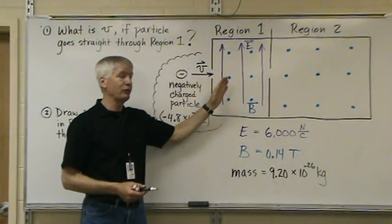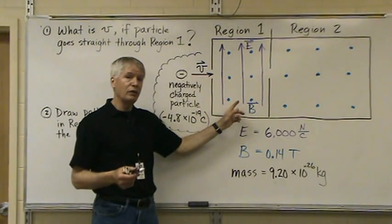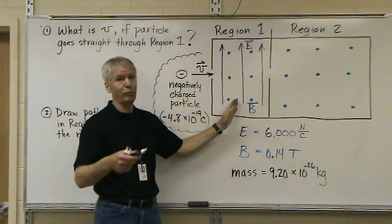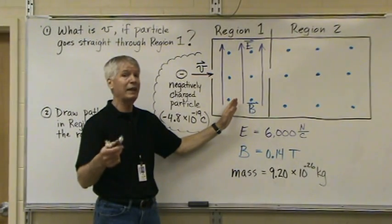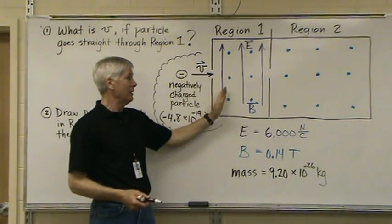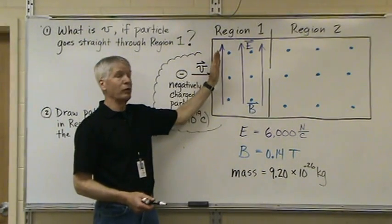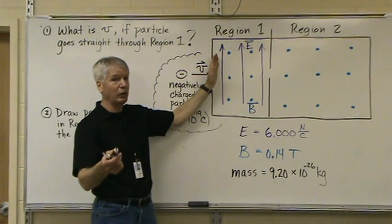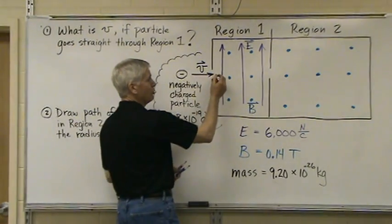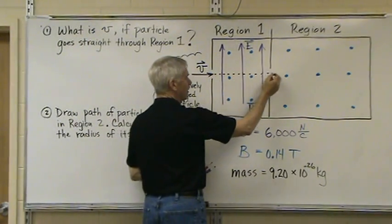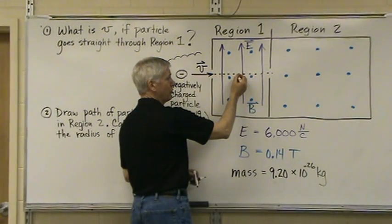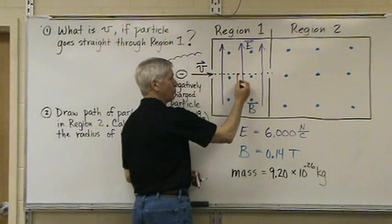Let's look at the electric field first. An electric field direction indicates how a proton or a positively charged particle will move in that field. Well, we've got just the opposite. Therefore, this charged particle will not move upward as a positively charged particle will. It will move downward. So, if this particle moves straight on through like this, the entire time there will be an electric force acting on it in a downward direction.